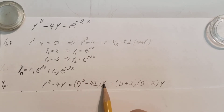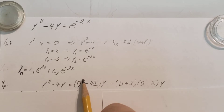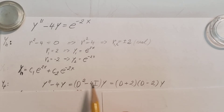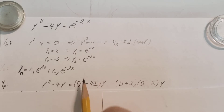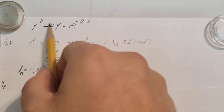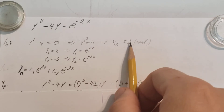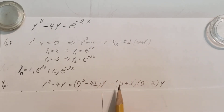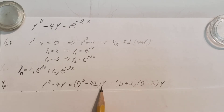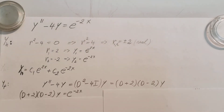If we multiply this in, D squared tells me I'm going to need the second derivative of y, and the identity operator I just tells me to replace I with y — it stays as is. So these operators replace the left-hand side. And since we know the two roots, we can break this up and write it as D plus 2, D minus 2, times y.